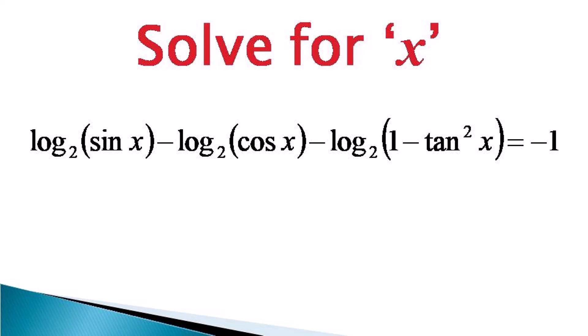Here we have a logarithmic trigonometric equation given as log₂(sin x) minus log₂(cos x) minus log₂(1 - tan²x) is equal to minus 1.